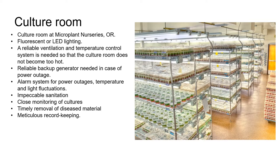Once plant material has been placed on a culture medium it's transferred from the transfer room to the culture room where the environmental conditions are carefully controlled. Lighting is provided by fluorescent or, more usually now, LED lights, and the photoperiod is closely controlled. For example, at Driscoll's in their Watsonville lab, berries are given a 16-8 photoperiod — 16 hours of light and 8 hours of dark — and Driscoll's maintains their culture room at a constant 72 to 74 degrees Fahrenheit both day and night. A reliable ventilation and temperature control system is needed, and a reliable backup generator is absolutely essential in case of power outages. An alarm system for power outages, temperature, and light fluctuations is also recommended.